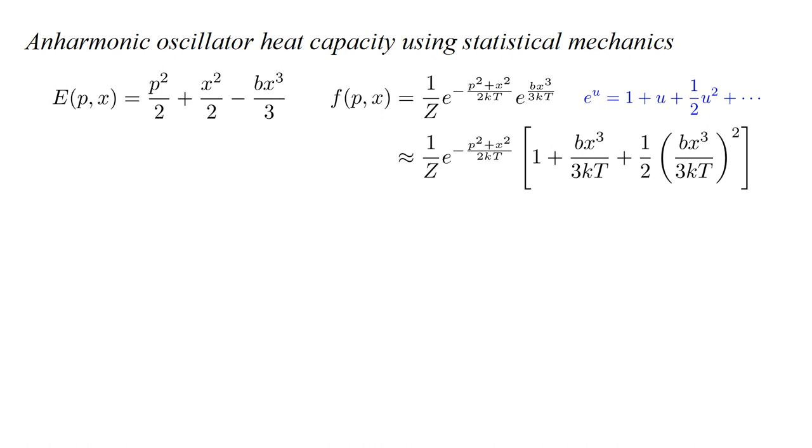If b is very small, then for the x values of interest, the exponent of the last factor is very small. Then we can use the approximation, e to the u equals one plus u plus one-half u squared, to write the last factor as a sum of three terms.